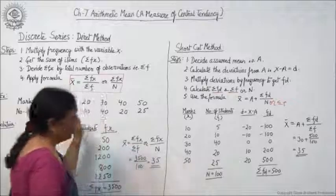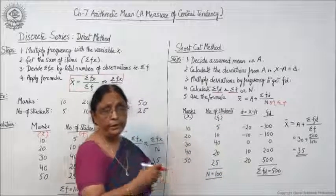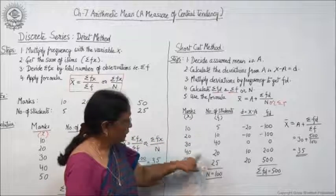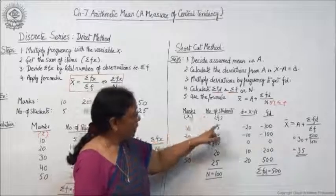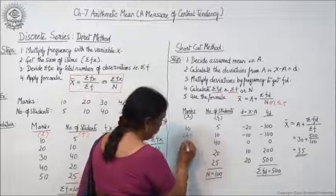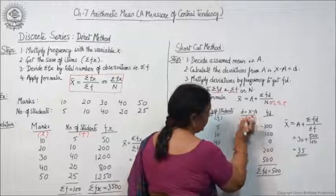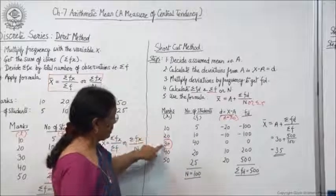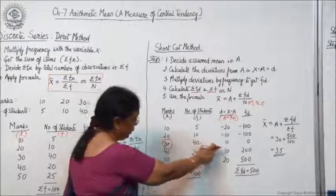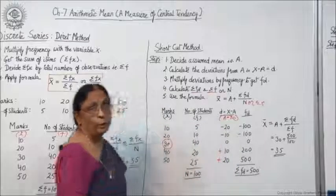Now let us see how the same example is done with the shortcut method. Again, marks and number of students are given — same data. Name the marks column as x and number of students as f. Then take out the deviations, that is x − A. In this case, the assumed mean A is taken as 30. So: 10 − 30 = −20, 20 − 30 = −10, 30 − 30 = 0, 40 − 30 = +10, 50 − 30 = +20.